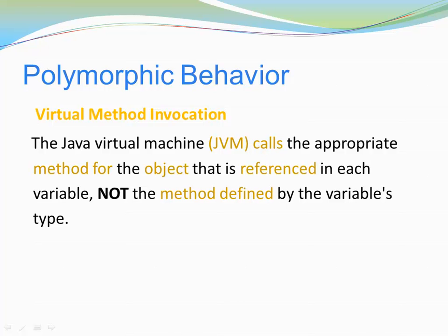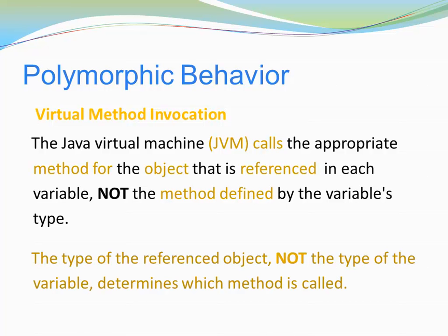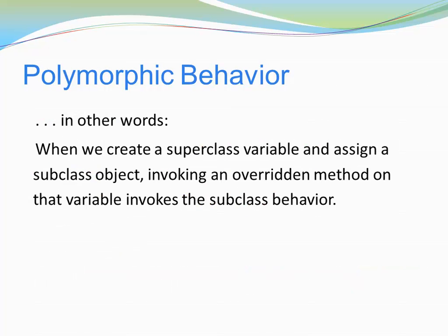The Java virtual machine calls the appropriate method for the object that is referenced in each variable, not the method defined by the variable's type. The type of the referenced object, not the type of the variable, determines which method is called. In other words, when we create a superclass variable and assign a subclass object, invoking an overridden method on that variable invokes the subclass behavior.